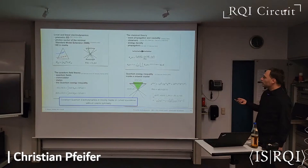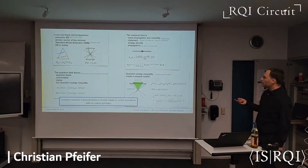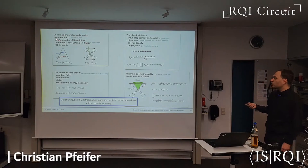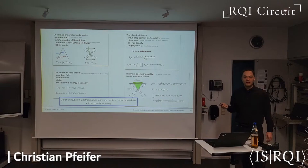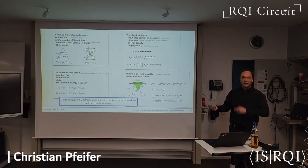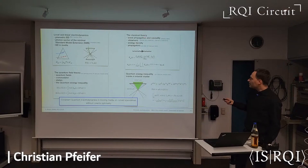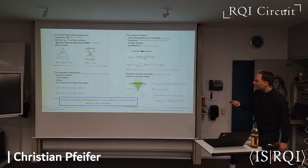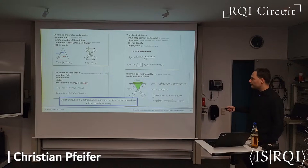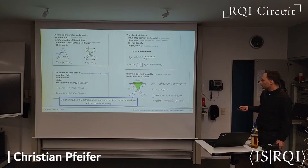Conclusion and summary: I introduced local and linear pre-metric electrodynamics. One application area is exactly the photon sector of the minimal standard model extension. It describes electromagnetic fields in media, which is the more conservative application. We know how to define observers and the causal structure just on the basis of pre-metric electrodynamics, how to construct the propagators, and how to write down the quantum field theory most easily in terms of algebraic quantum field theory on curved spacetime without needing to construct Hilbert spaces. I showed explicitly how to derive quantum energy inequalities inside a uniaxial crystal.